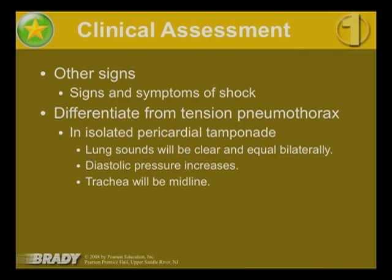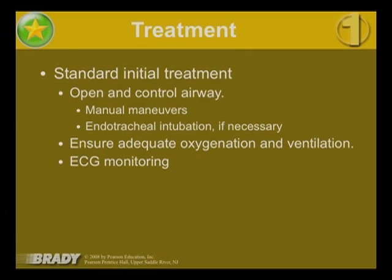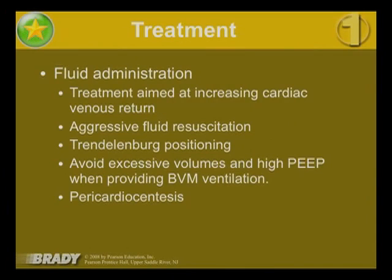To differentiate from tension pneumothorax: in isolated pericardial tamponade, lung sounds will be clear and equal bilaterally, diastolic pressure will be increased, and the trachea will be midline. Initial treatment: open and control the airway with manual maneuvers or endotracheal intubation if necessary; ensure adequate oxygenation and ventilation; continuous EKG monitoring; aggressive fluid resuscitation to increase cardiac venous return; Trendelenburg positioning; avoid excessive volumes and high PEEP during BVM ventilation. Pericardiocentesis is the definitive treatment. If the patient is in cardiac arrest, CPR and ACLS are performed concurrently.